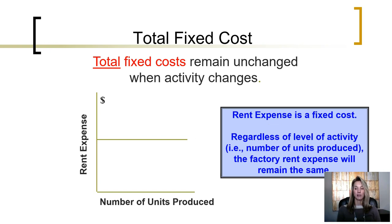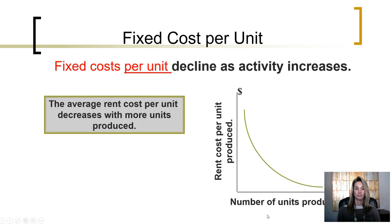Rent expense is a fixed cost because regardless of the level of activity — regardless of the number of units produced or how many units are sold — the factory rent expense will remain the same. On a per-unit basis, however, fixed unit costs will decline as activity increases. The average rent cost per unit decreases with more units produced.